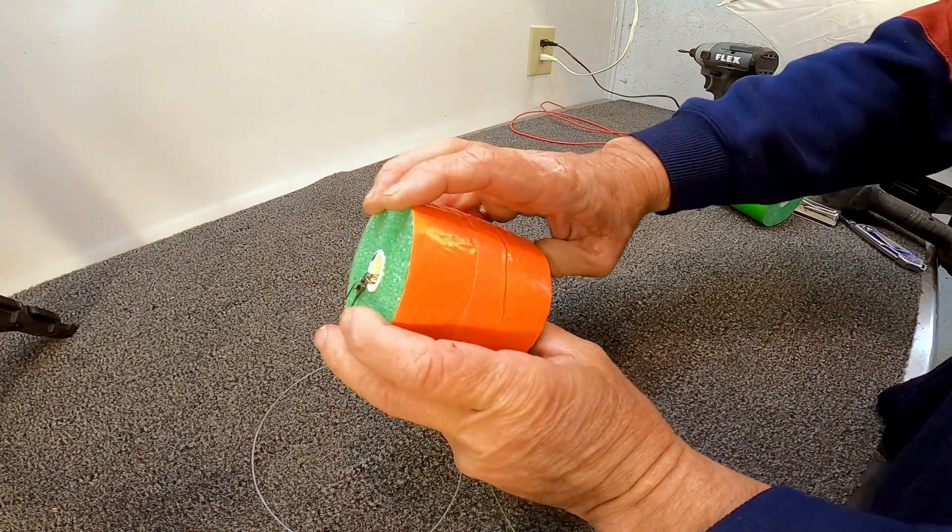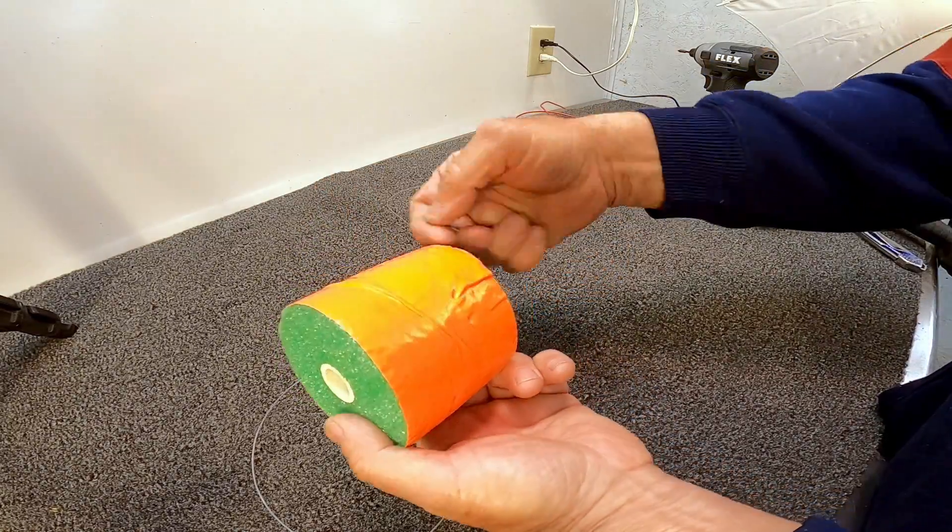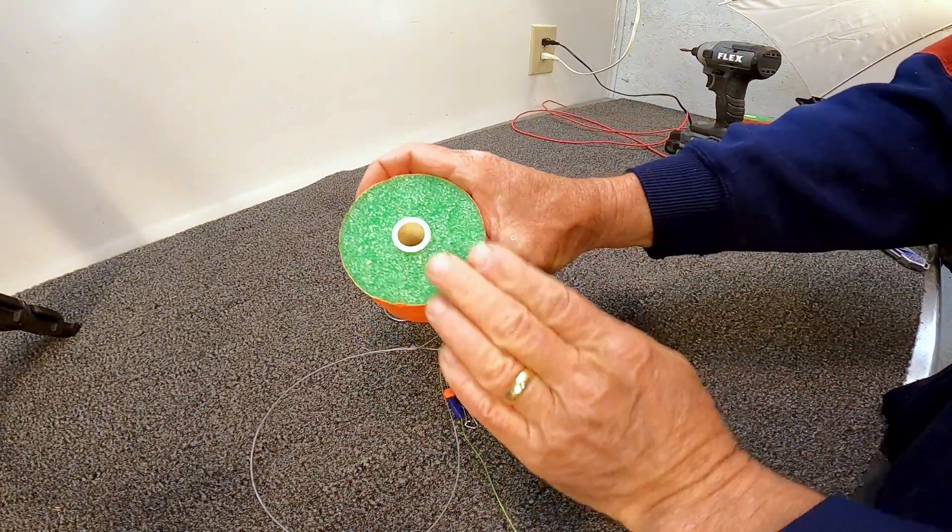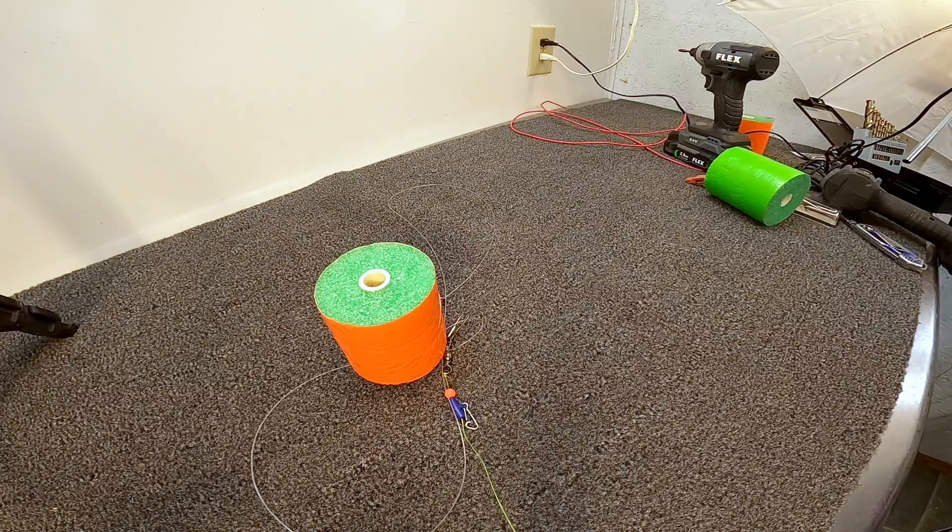You see it. It's in there good. There's no need to glue it. That way if the noodle gets rotten. Peel the tape off of it. Take the screw out. Put another piece of noodle on it. And I hope that helps y'all out. Tight lines. Have good luck.